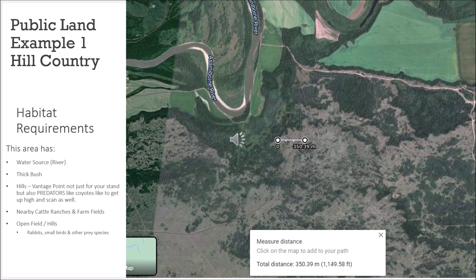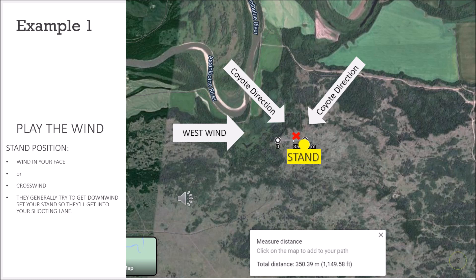We'll take a closer look on the next slide and go over where we're placing our stand and a wind direction scenario. On this slide we have a west wind. Our stand is placed on a small hill with a tree line as our backdrop, so we're camouflaged in there. The red X is where we're placing the decoy — at the bottom of the hill in a bit of an open area, about 130 meters from our stand.